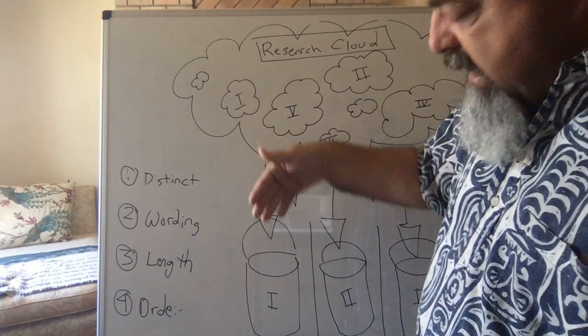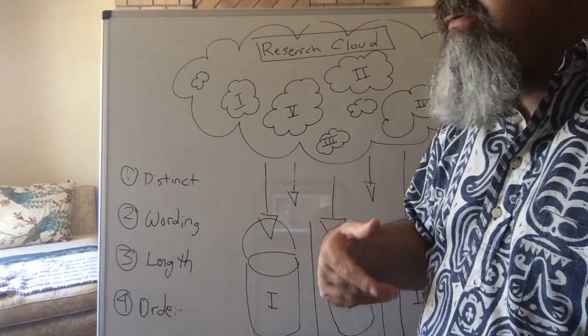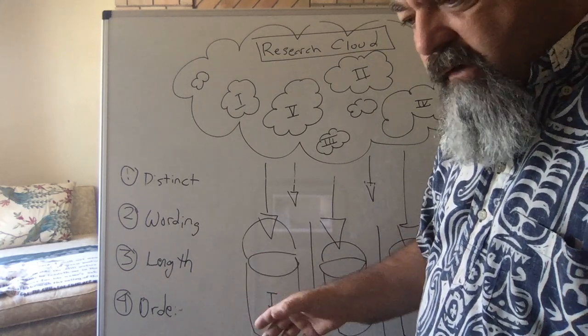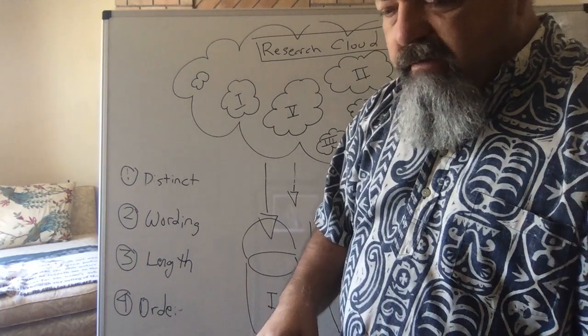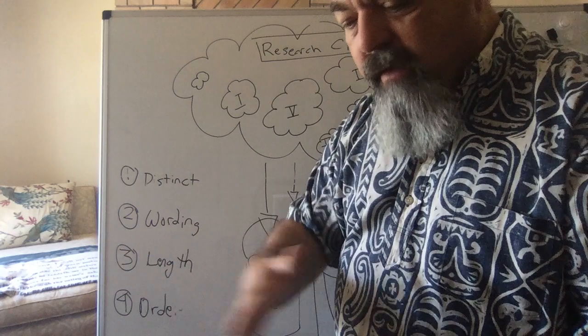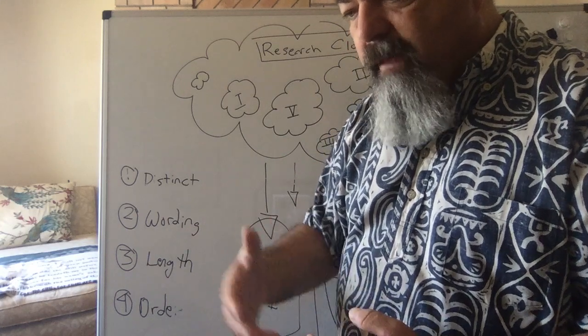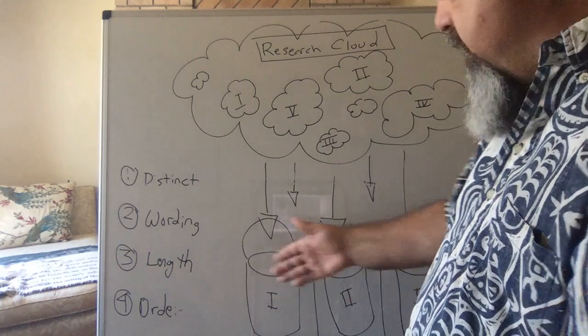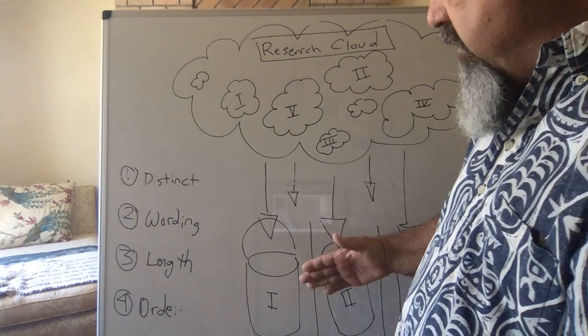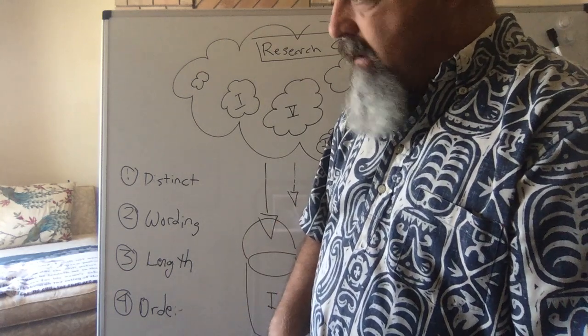One method is called chronological. This works best with process speeches or how-to speeches. Here's how to change a tire: first you're going to do this, second this, third this. Or maybe a battle during the Civil War: day one this happened, day two this happened, day three this happened. There's a chronological processing of information over time or sharing of information in steps that logically make sense in the order that they are in. That doesn't work with persuasive. How-to speeches are best for using it, but you can do other ones as well, like an event speech.